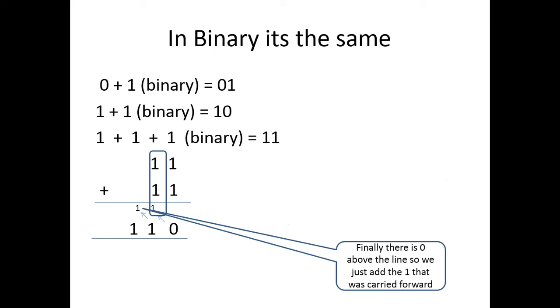So that actually means that we write down the 1 and carry forward the 1, which is quite important. And finally, there is a 0 above this one. So it just becomes 1 on its own. Nothing plus 1. So it's 110. It is that simple. It really is nice.